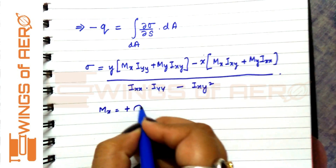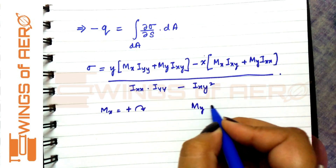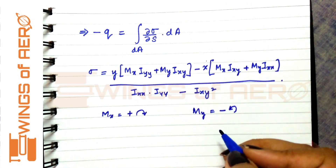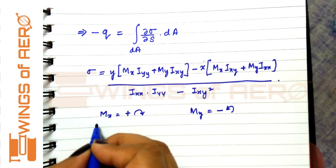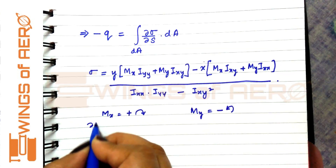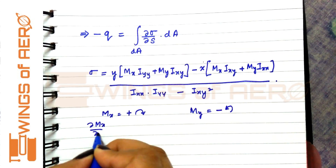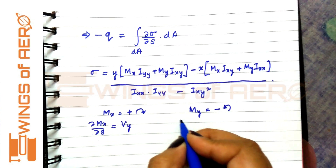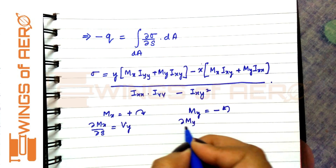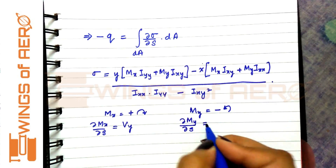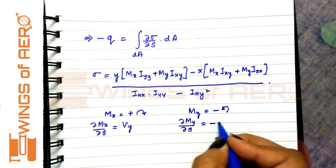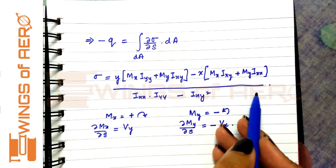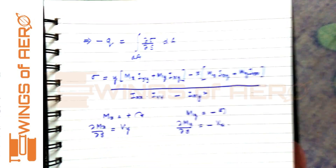The moment Mx is taken in a positive clockwise direction, and the moment in the y-direction My is taken in an anticlockwise direction. This means that ∂Mx/∂s gives us Vy, and when we differentiate ∂My/∂s we get minus Vx.